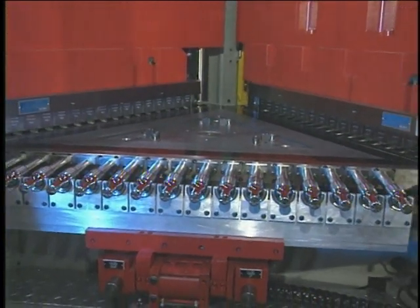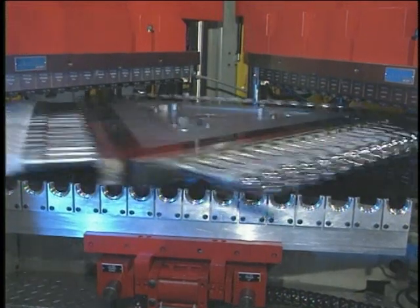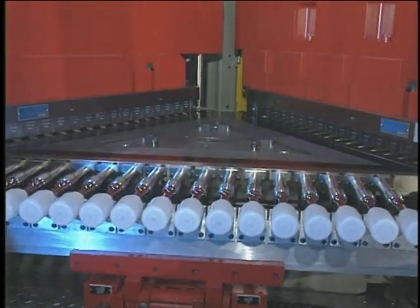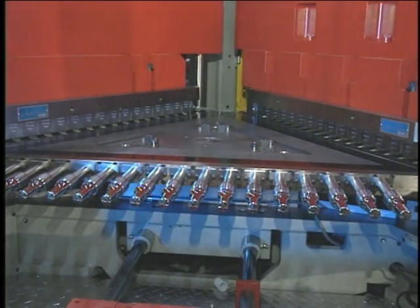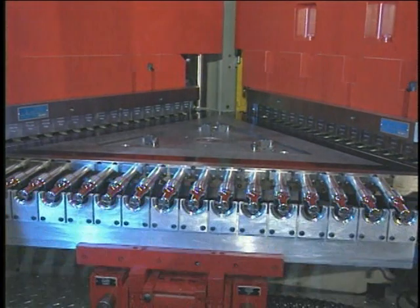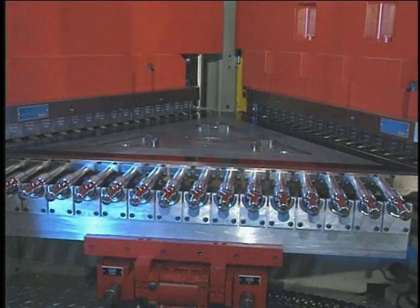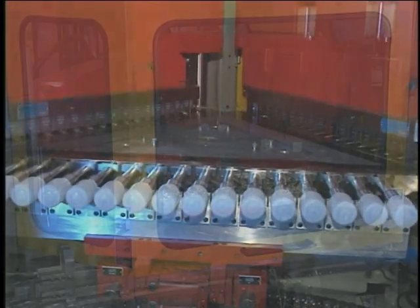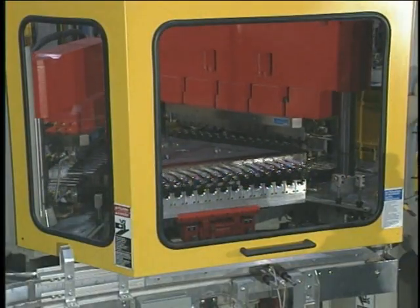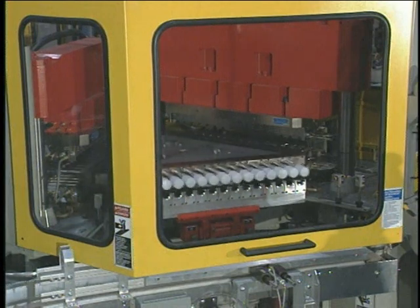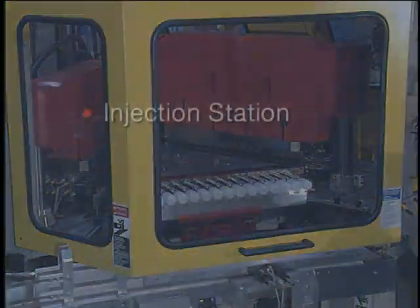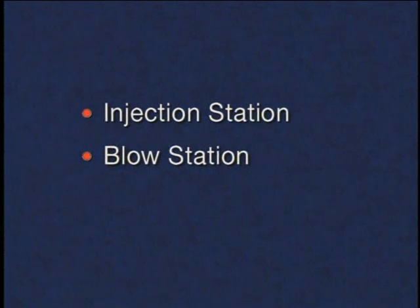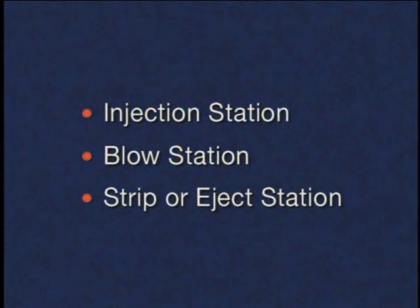Injection blow molding incorporates elements of conventional thermoplastic injection molding with blow molding, and is generally more economical than extrusion blow molding for containers under a quarter liter in size and large production runs. Injection blow molding machines typically contain three stations: the injection station, the blow station, and the strip or eject station.